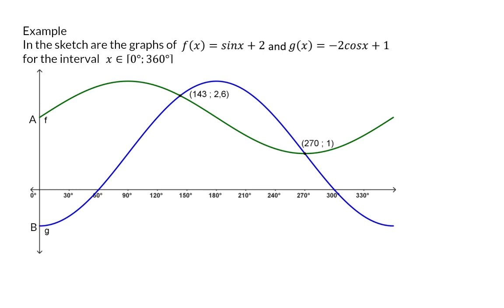We are given that function f is a sin graph that has moved up two units. You need to know that the mother graph of sin starts at 0 and then has a maximum at 1 and a minimum at minus 1. After this graph has moved up two units, the new maximum will now be at 3. The y-intercept also moved up 2 to 2, and the minimum will now be at 1.